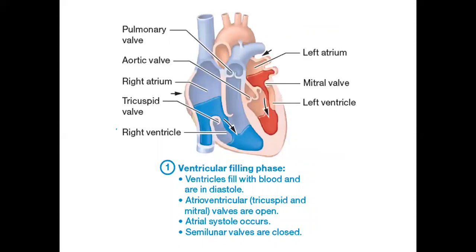Step one is called ventricular filling — it is what it sounds like: the ventricles fill up with blood coming from the atria. On the right side of the heart, the right atrium has received blood from the superior and inferior vena cava. As it relaxes, blood flows down into the ventricles — that's the ventricular filling phase.